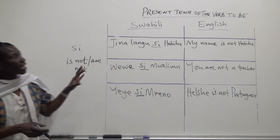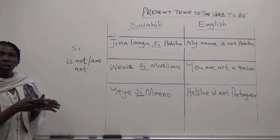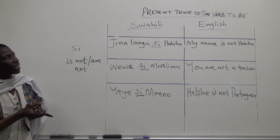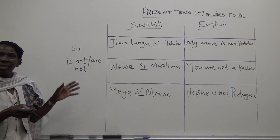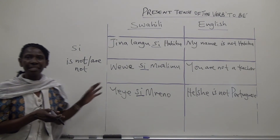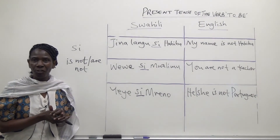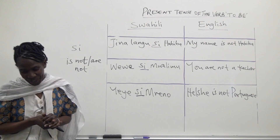So these examples help us to appreciate how we use the verb to be in the affirmative as well as in the negative form.